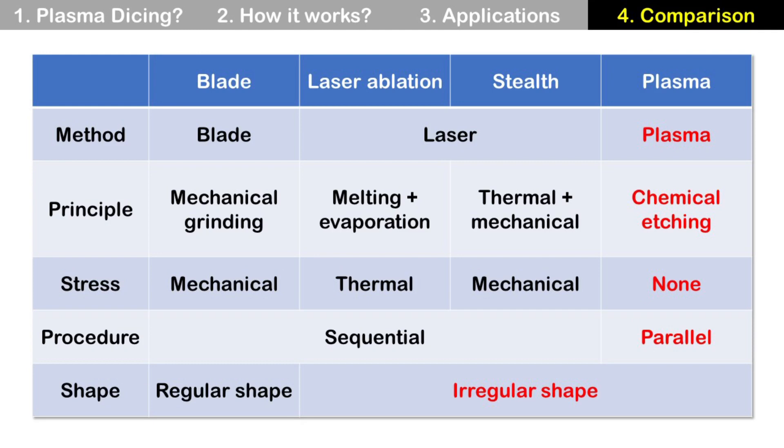Also, it can etch much narrower scribe lines like 10 µm compared with 80 µm for blade dicing. And it increases the total number of dies in one wafer. This is very important to reduce fab cost per die.